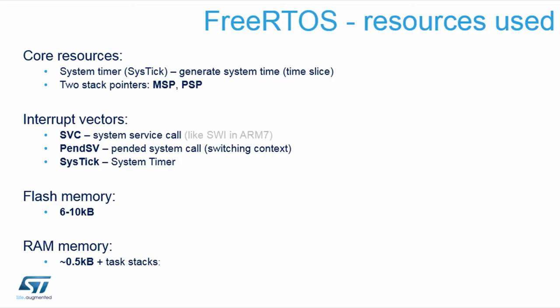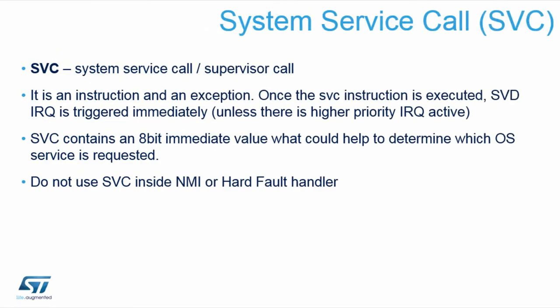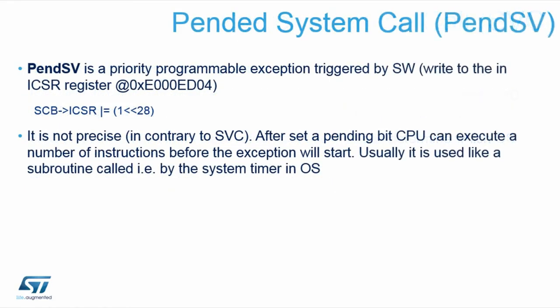The flash memory required by the kernel depends on how many features you enable. You can strip away mutexes, counting semaphores, timers, and choose your memory management scheme — all of this affects kernel size. A really minimal configuration uses just queues and mutexes. A full-featured FreeRTOS kernel will be a bit larger. In terms of RAM, it allocates approximately half a kilobyte plus everything you give to the heap. The SVC mechanism — launched by an instruction containing the request number — is more commonly used by Keil's RTX; FreeRTOS uses it less.